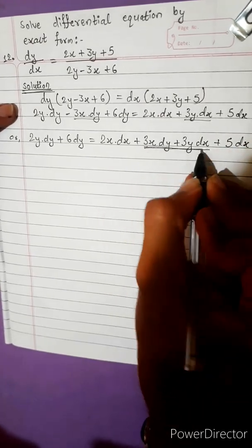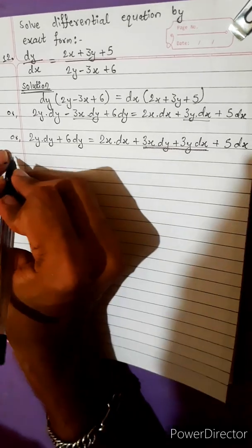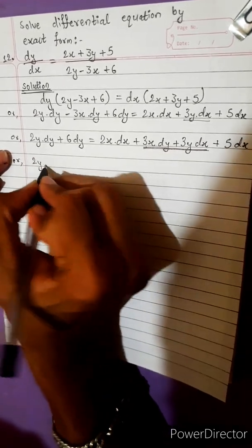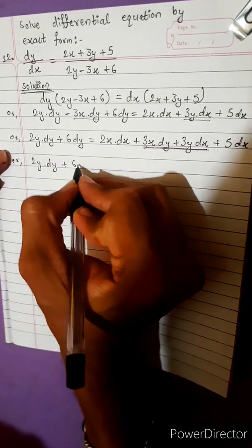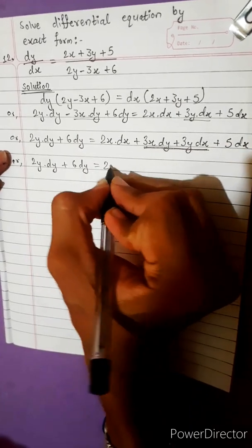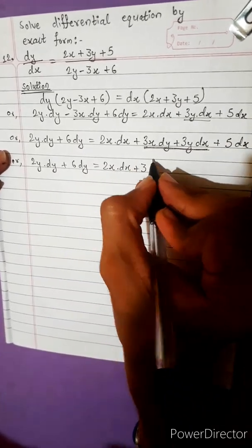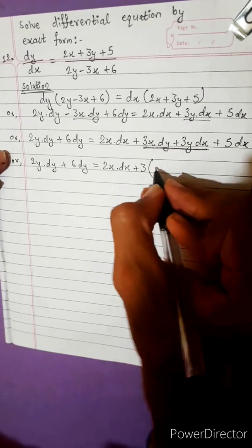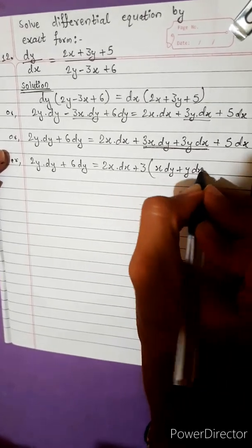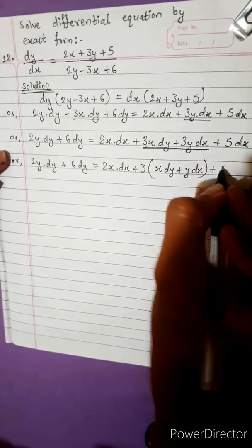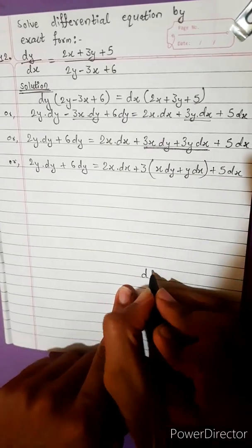Now let's focus on this — this is the main solution. This is the common term. So: 2y dy plus 6 dy equals 2x dx plus 3x dy plus 5 dx.